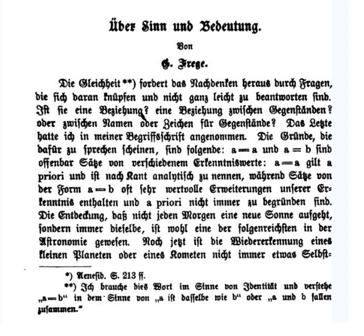In his theory of descriptions, Bertrand Russell held the view that most proper names in ordinary language are in fact disguised definite descriptions. For example, "Aristotle" can be understood as "the pupil of Plato and teacher of Alexander" or by some other uniquely applying description. This is known as the descriptivist theory of names. Because Frege used definite descriptions in many of his examples, he is often taken to have endorsed the descriptivist theory, and thus Russell's theory was conflated with Frege's theory of sense — for most of the 20th century, this "Frege-Russell" view was the orthodox view of proper name semantics.